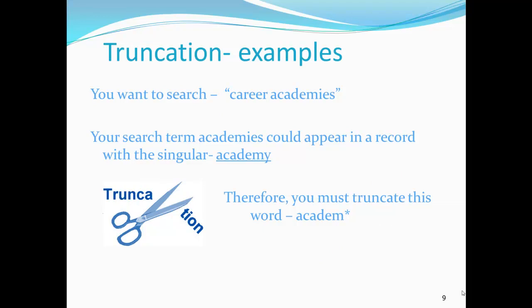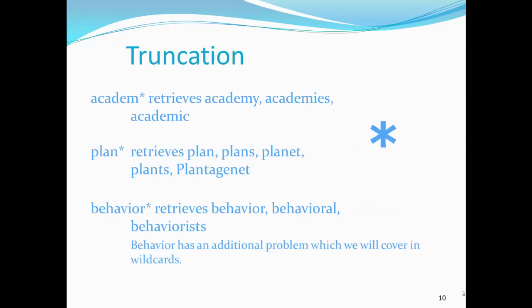The next search we want to examine is a search for career academies. Because an article could possibly talk about one career academy, you need to decide how to truncate or stem your term. This is called truncation. For academy, we will put the appropriate truncation symbol after ACADEM. You will need to consult the database to help determine which symbol to use. ACADEM* will retrieve academy, academies, and academic. If academic takes the search in a wrong direction, you might choose to use OR with academy or academies.